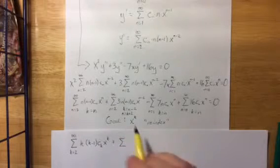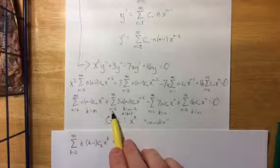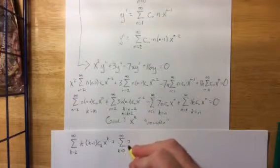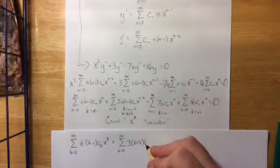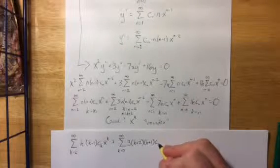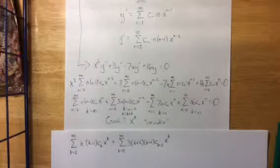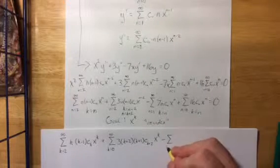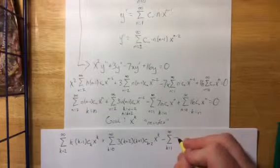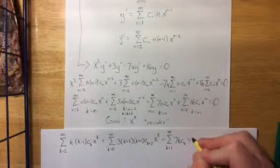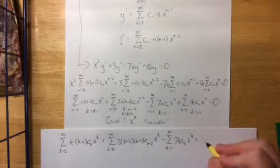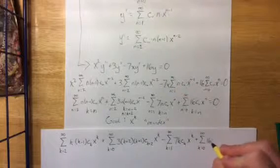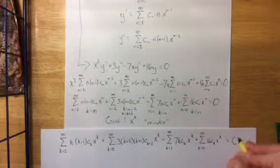The next term has very little re-indexing since k equals n is the substitution, so it starts at k equals 1 to infinity of 7k c sub k. That one's very straightforward. Our last term, again with k equals n substitution, starts at k equals 0 to infinity of 16 c sub k times x to the k. Once again, this whole expression is all supposed to be equal to 0.